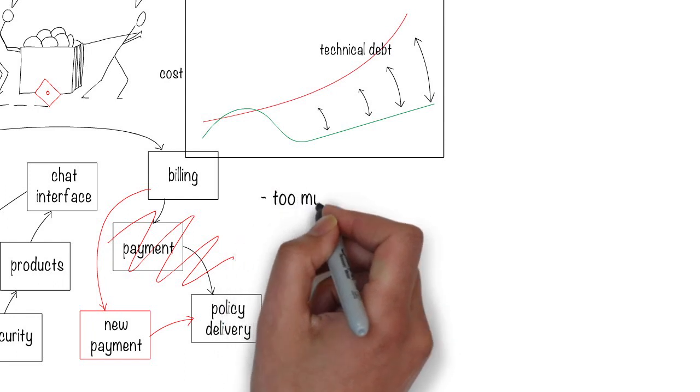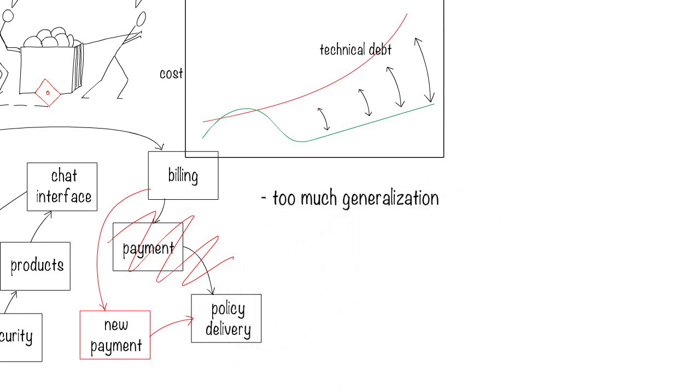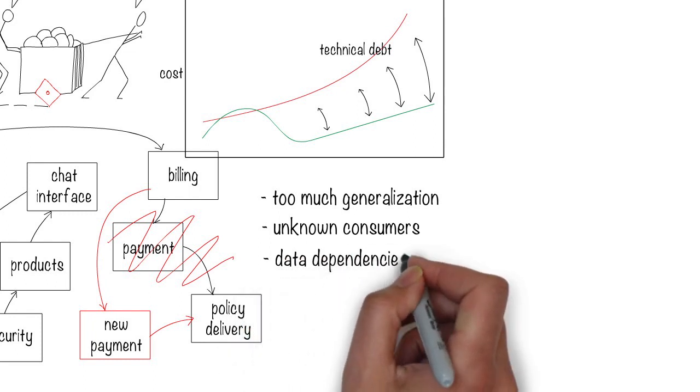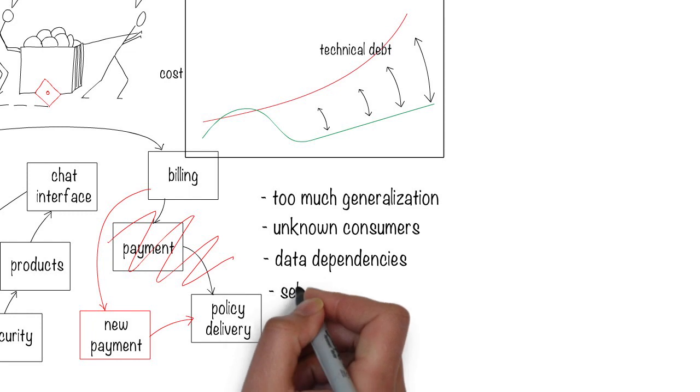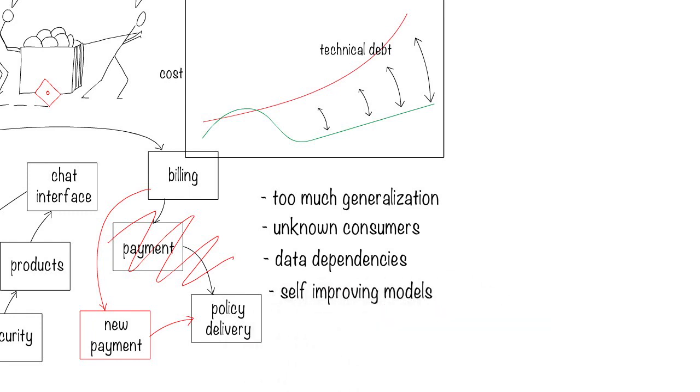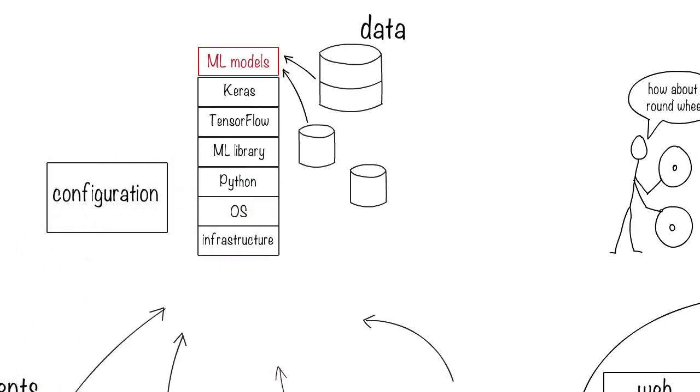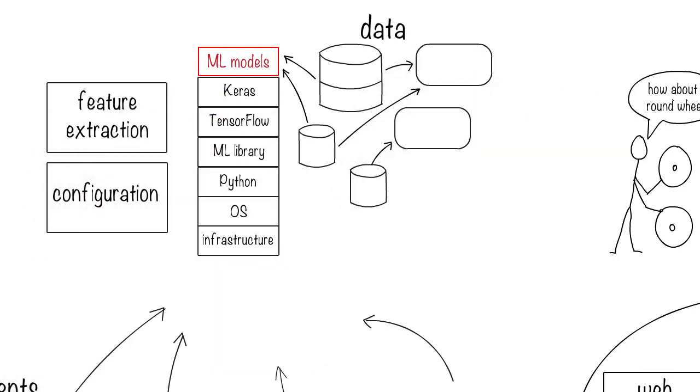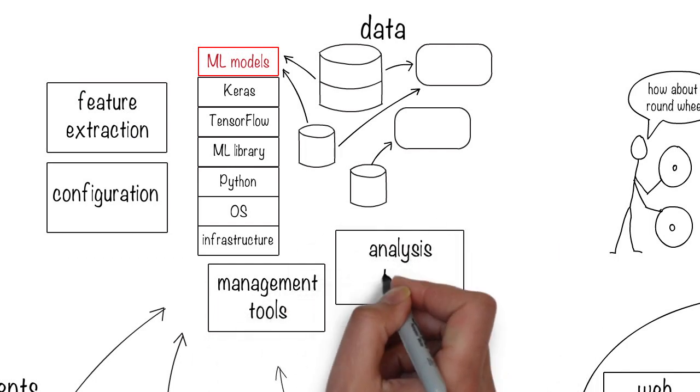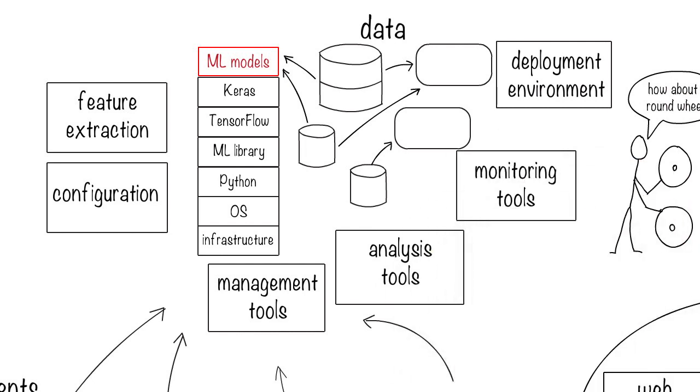Other situations that can cause technical debt include too much model generalization where we build models that do more than they should, unknown consumers because providing backward compatibility is going to be costly, data dependencies where slight changes in the data can cause huge variations, self-improving models where the machine uses its own result to train itself and small deviations can cause a lot of instability, and changes to the machine learning ecosystem like the configuration, data, feature extraction, management tools, analysis tools, deployment environment, monitoring, etc., which is often over 90% of the whole solution compared to the less than 10% of actual machine learning code.